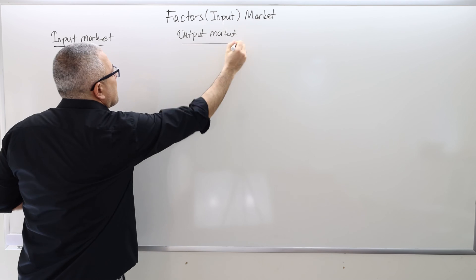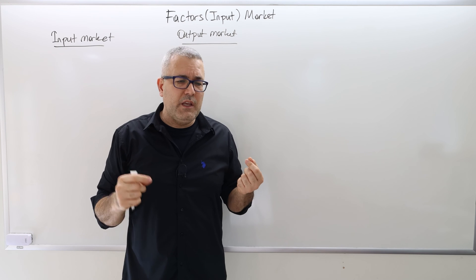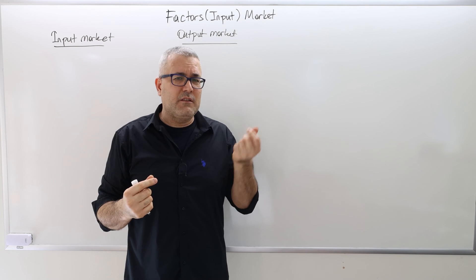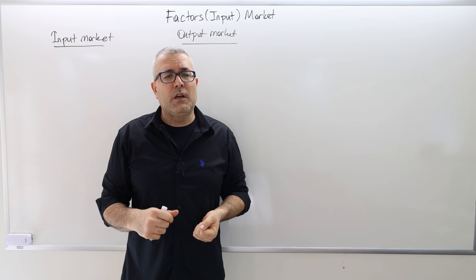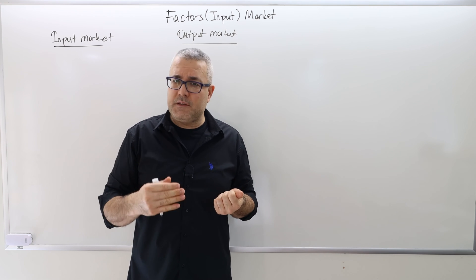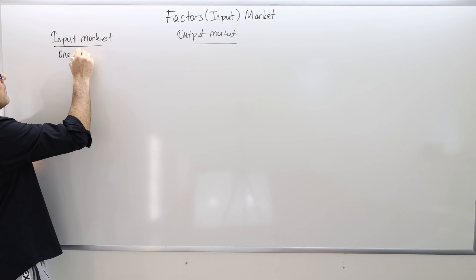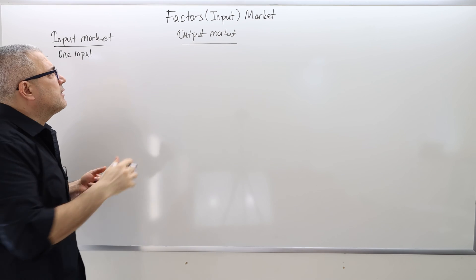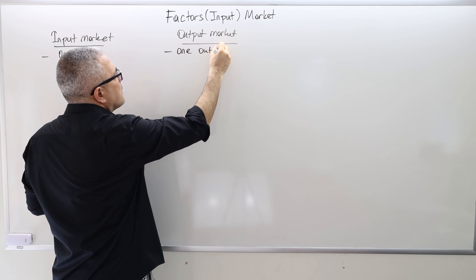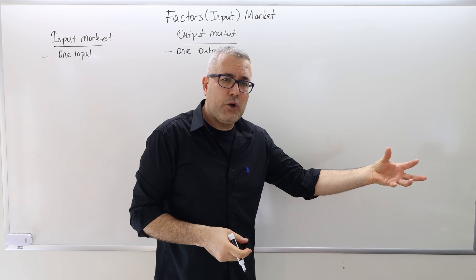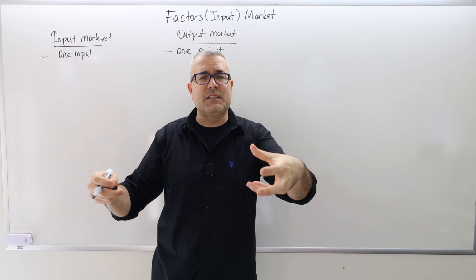In the input market, for example, in intermediate microeconomics we considered two variables — labor and capital, the two standard inputs. For simplicity, we're going to assume there is only one input. Most of the time we'll call it labor. And in the output market, there's going to be one output. So the firm uses labor as an input, produces some output, and sells it in the output market.